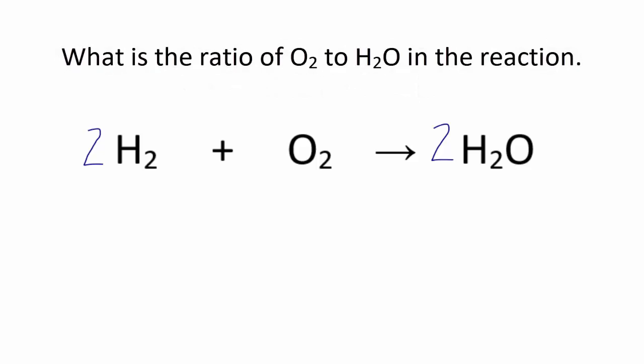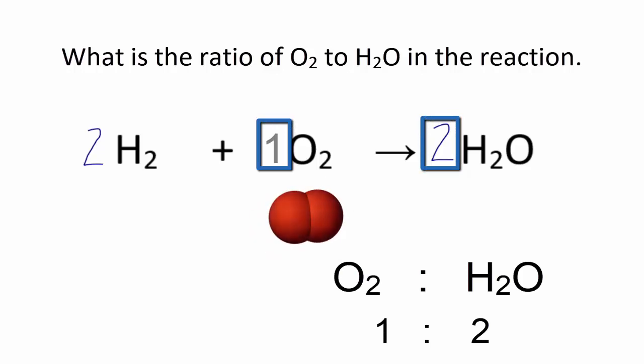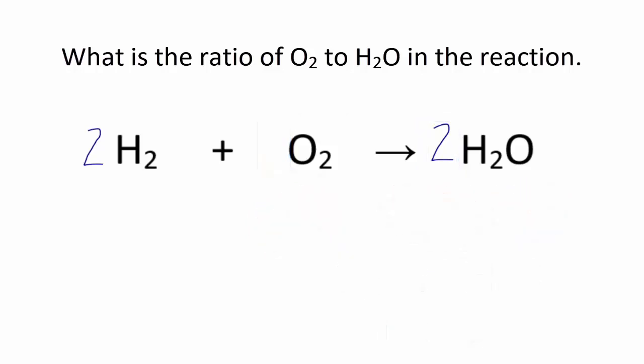We have a balanced equation, and here's the question. We want to know the ratio of O2 molecules to H2O molecules in the reaction. We can see O2 has a coefficient of 1, H2O has a coefficient of 2. That's a 1 to 2 ratio. For every 1 O2 molecule, 2 H2O molecules are formed. But this is the mole ratio, so we think in moles. For every 1 mole of O2 molecules, 2 moles of H2O molecules are formed.